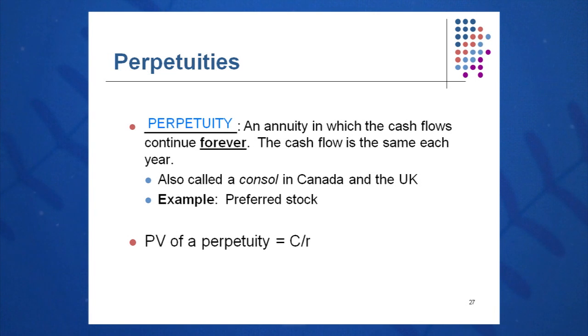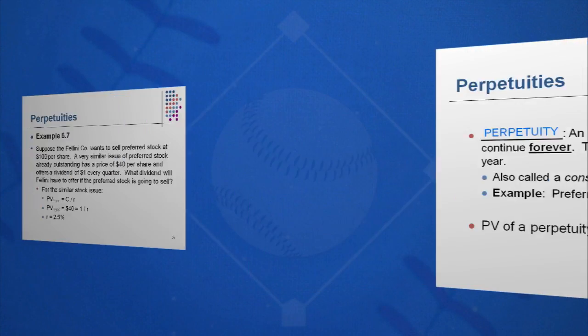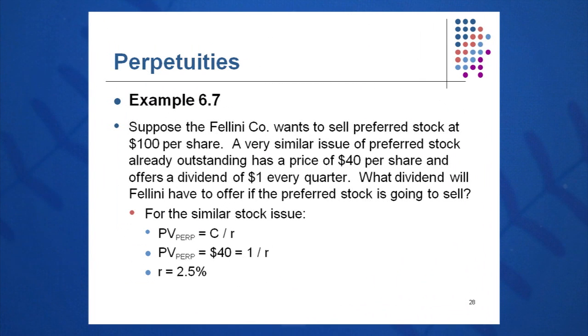A perpetuity is very simply c over r. Never forget this. If someone asks you in an interview what's the present value of a perpetuity, the answer is very simply: c over r.